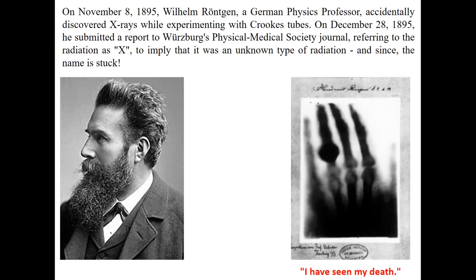A bit of history about its discovery. On 8th November 1895, Wilhelm Konrad Röntgen, a German physics professor, accidentally discovered X-rays while doing experiments with the Crookes tube — the discharge tubes. On 28th December 1895, he submitted a report to the Würzburg Physical Medical Society's journal, referring to the radiation as X, to imply that it is of an unknown type or origin, and somehow the name has stuck. That is the photograph of Röntgen, and the other photograph is the very first image taken from an X-ray — it belongs to the hand of Röntgen's wife.